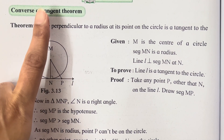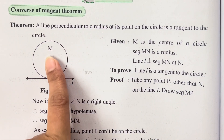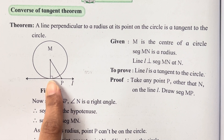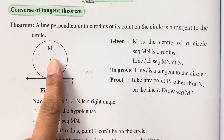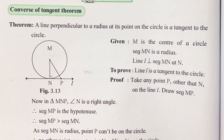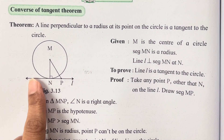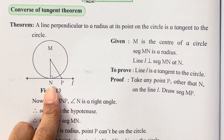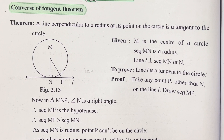Today we will be studying the converse of tangent theorem. The statement states: a line perpendicular to a radius at its point on the circle is a tangent to the circle. That is the converse of the tangent theorem — the statement of the converse has been given.